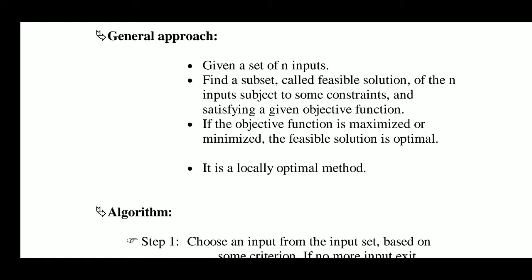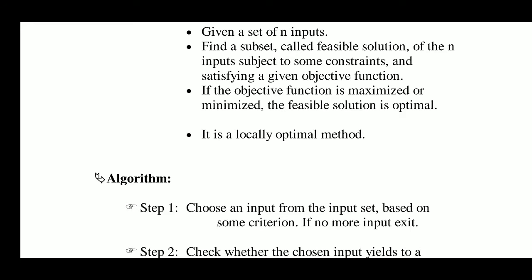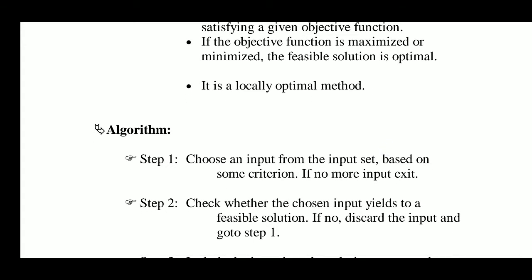Like in fractional knapsack, the objective function was to maximize the benefit, and the constraint was that you need to take items with total weight according to the knapsack capacity — you cannot take items with total weight greater than the knapsack capacity. In fractional knapsack, if the objective function is to maximize or minimize, the feasible solution is the optimal solution. There may be many feasible solutions but one of them will be optimal, and the greedy approach will always give you the locally optimal method.